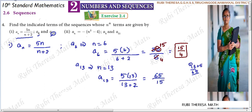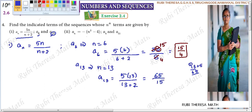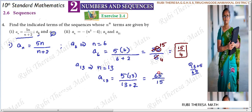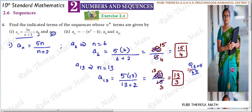13 plus 2 is 15. Again, 5 is a common factor in 65 and 15. 65 divided by 5 is 13, and 15 divided by 5 is 3. So 13 by 3 is your 13th term.